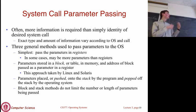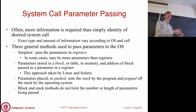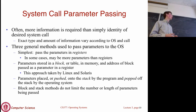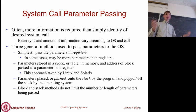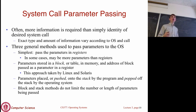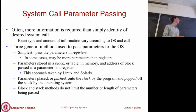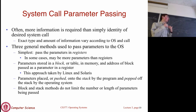The three general methods to pass parameters to the OS: store everything directly in registers (limited by register count and size), use a block or table in memory and pass its address in a register (used by Linux and Solaris), or use the stack by pushing parameters and popping them off in the system call. The big benefit of the block or stack method is that you can use potentially an unlimited number of parameters of arbitrary size.